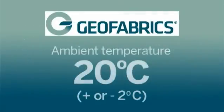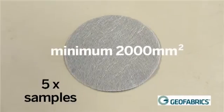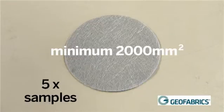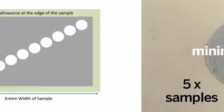The standard environment for this test method is an ambient temperature of 20 degrees Celsius plus or minus 2 degrees Celsius and humidity of 65% plus or minus 3%. A minimum of 5 specimens are taken from each sample. The specimens are circular and have a minimum area of 2,000 millimetres squared to ensure that there is a border for clamping.